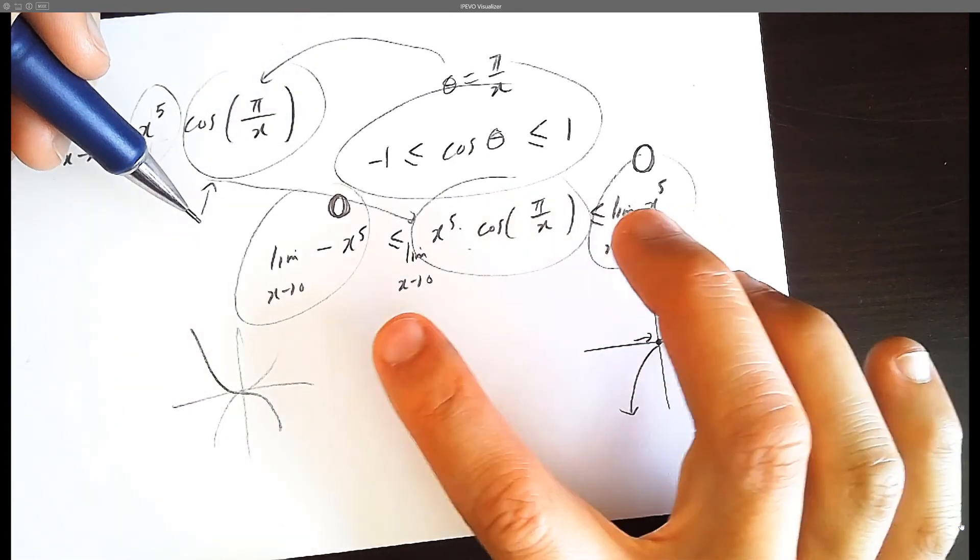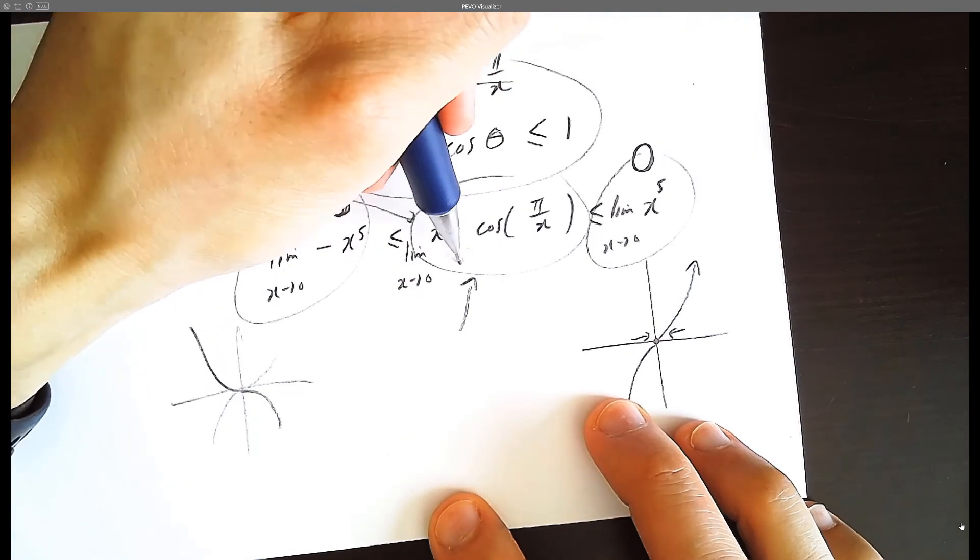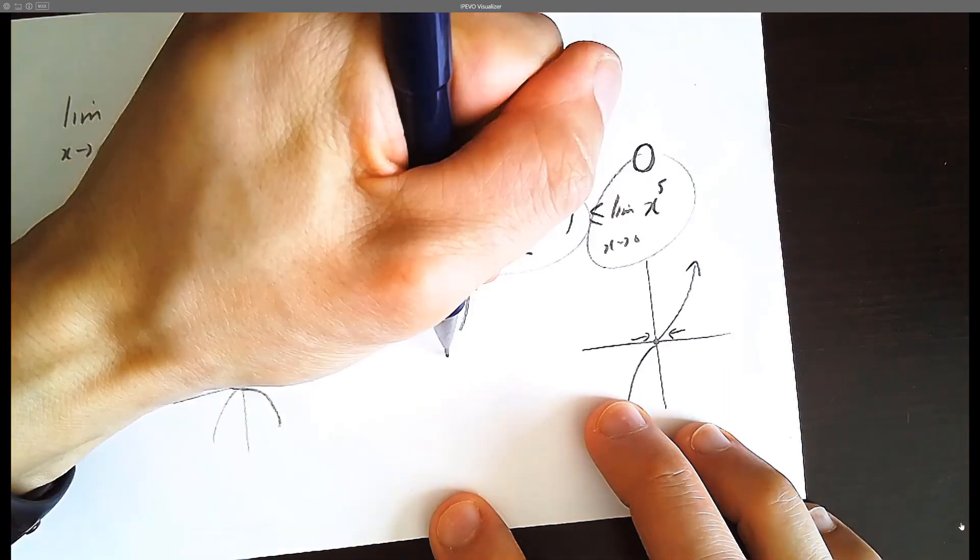What's between 0 and 0? The answer is 0. So therefore the limit as x approaches 0 of this function, which we were originally asking, must be 0.